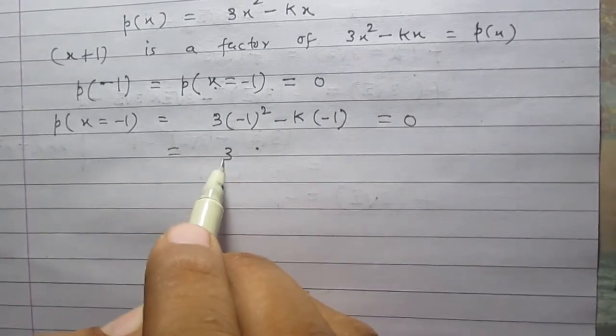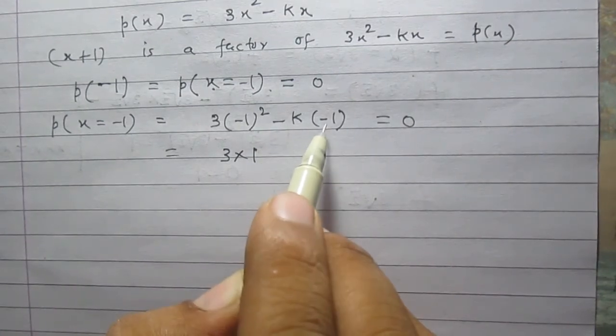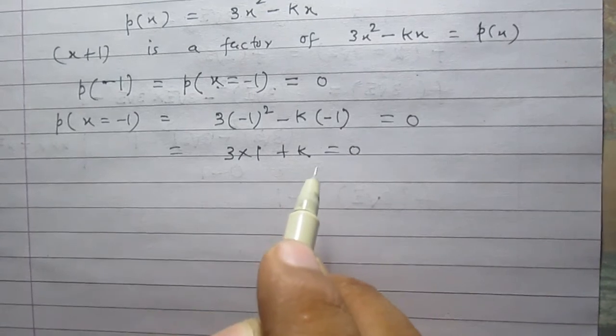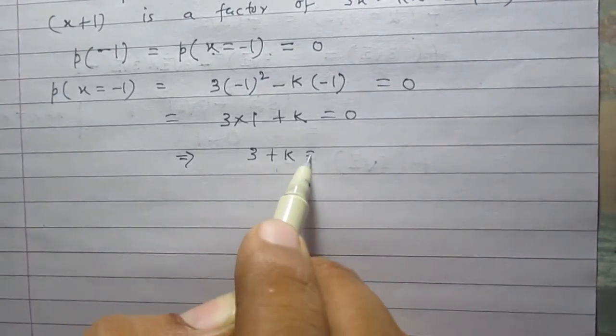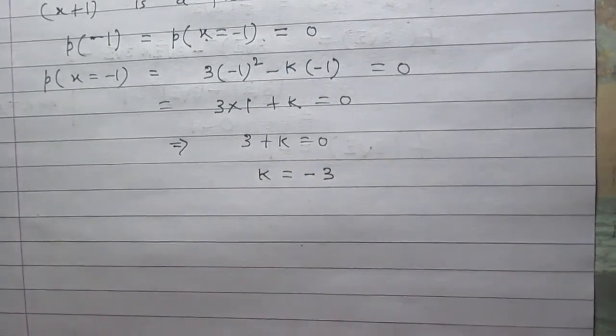3(-1)² = 3(1) = 3, and -k × (-1) = +k, so we get 3 + k = 0. In this way, we can say that k = -3.